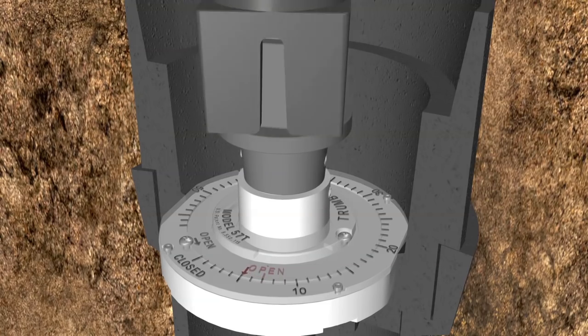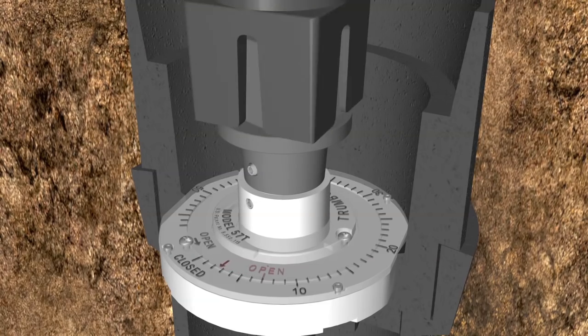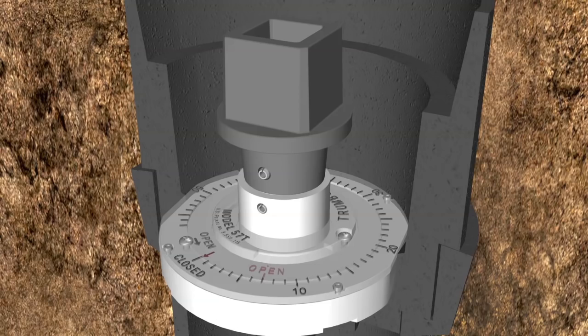Now, fully close the valve. The red indicator arrow should now align with the closed mark on the indicator. If it does, you have correctly calibrated your valve and valve position indicator assembly.